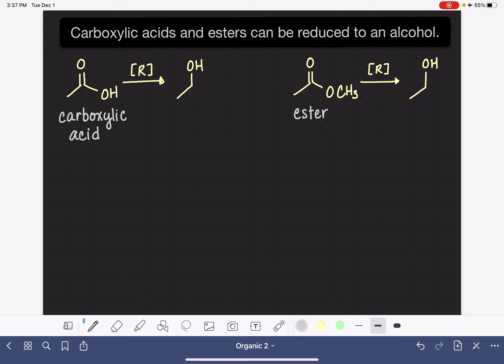This particular reduction process is a bit more difficult than the reduction of an aldehyde or a ketone. For the reduction of an aldehyde or a ketone, we have many different reagents that we could use. We have H2 gas with metal catalysts, lithium-aluminum hydride, and also sodium borohydride.